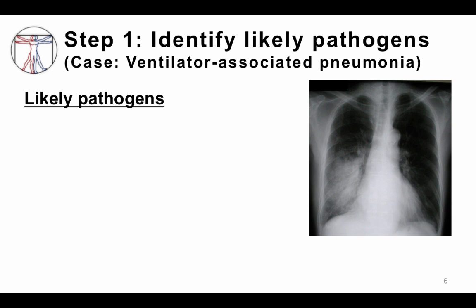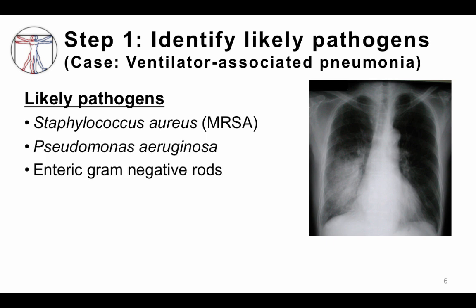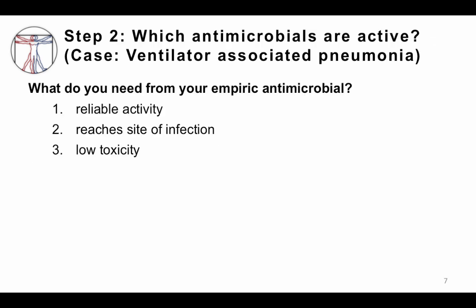When thinking about giving empiric antibiotic therapy, you need to consider what bacteria are most likely to cause this infection. His chest X-ray shows a new right lower and middle lobe infiltrate suggestive of pneumonia. Likely pathogens include Staphylococcus aureus — specifically methicillin-resistant Staphylococcus aureus — Pseudomonas aeruginosa, and enteric gram-negative rods like E. coli and Klebsiella, all of which can cause ventilator-associated pneumonia. You need to pick antibiotics that are active against those pathogens with good lung penetration and low toxicity.